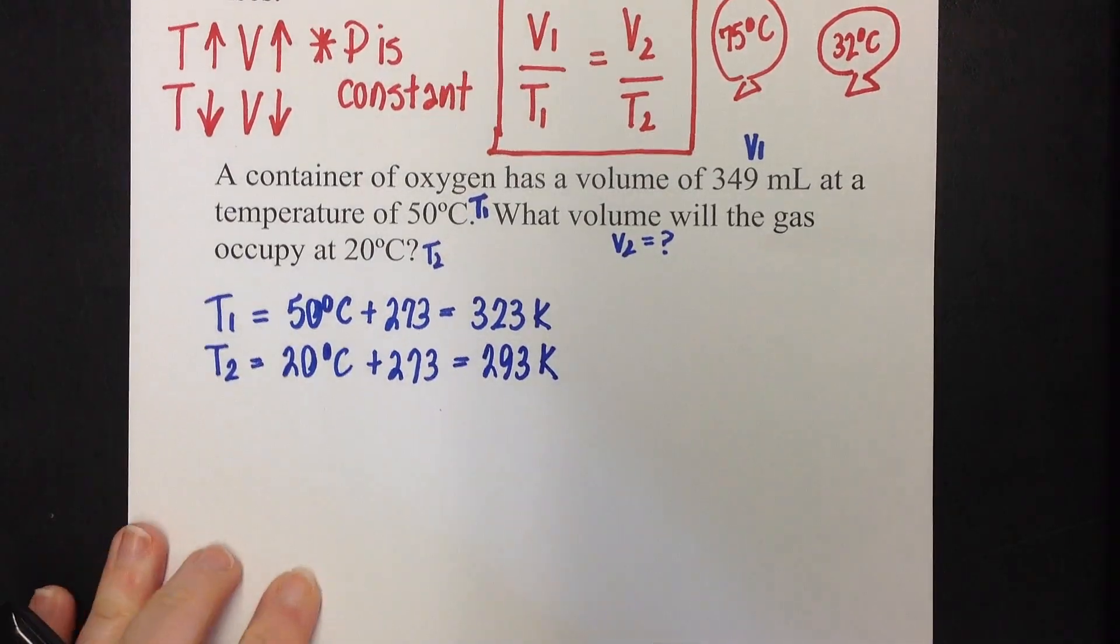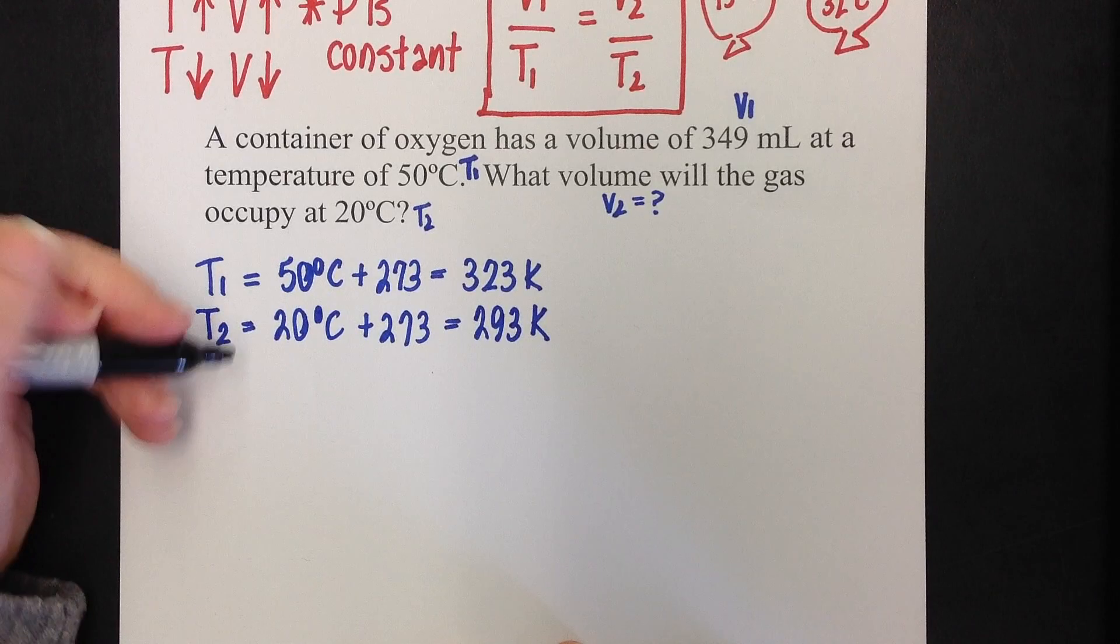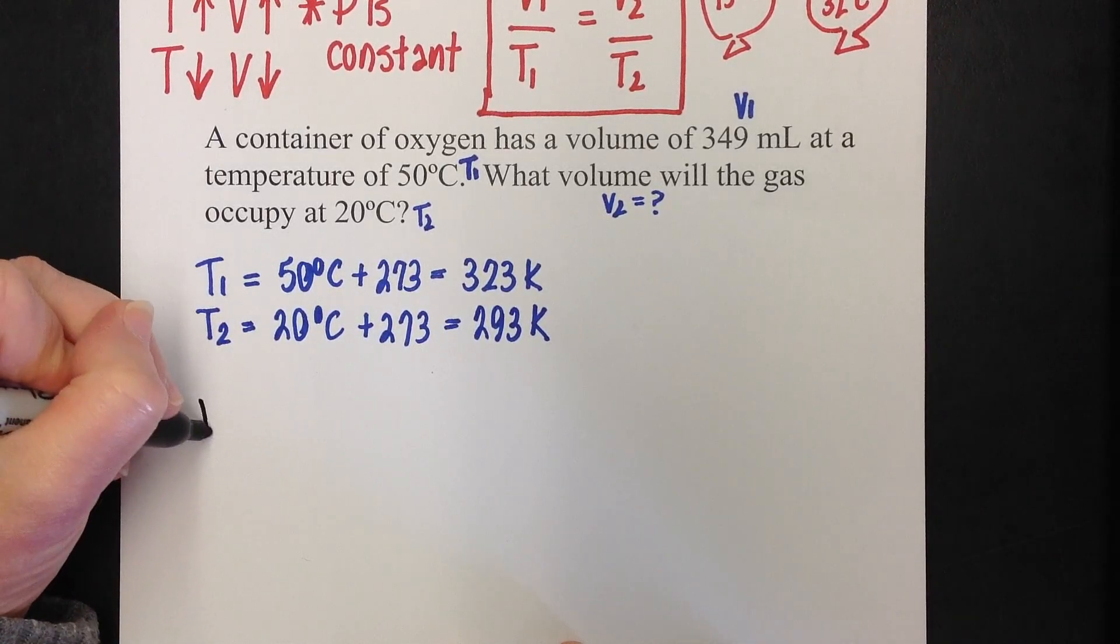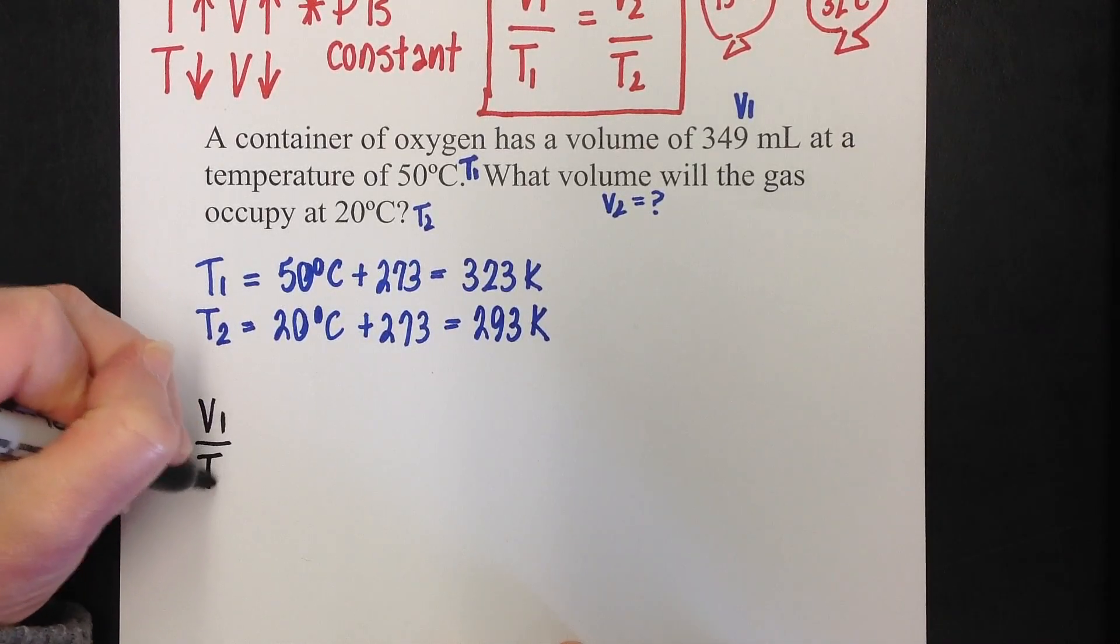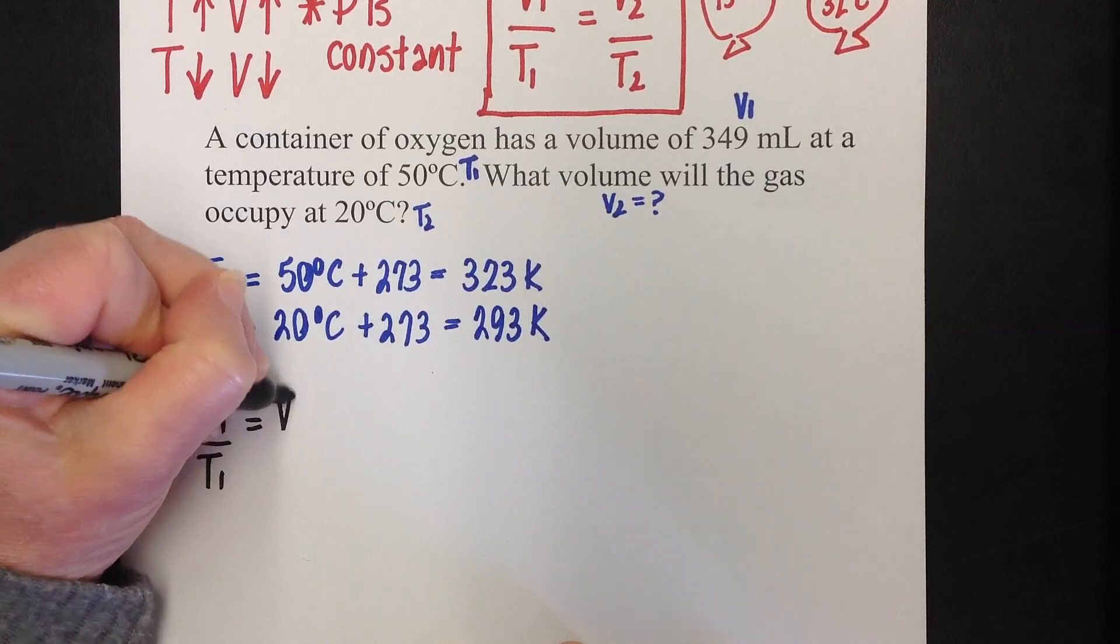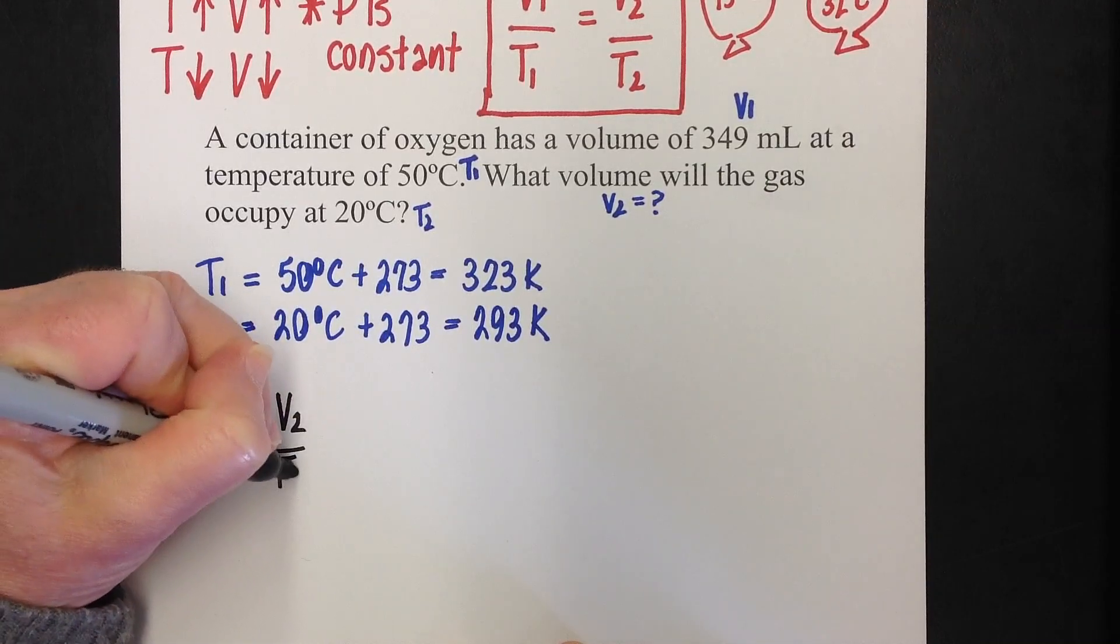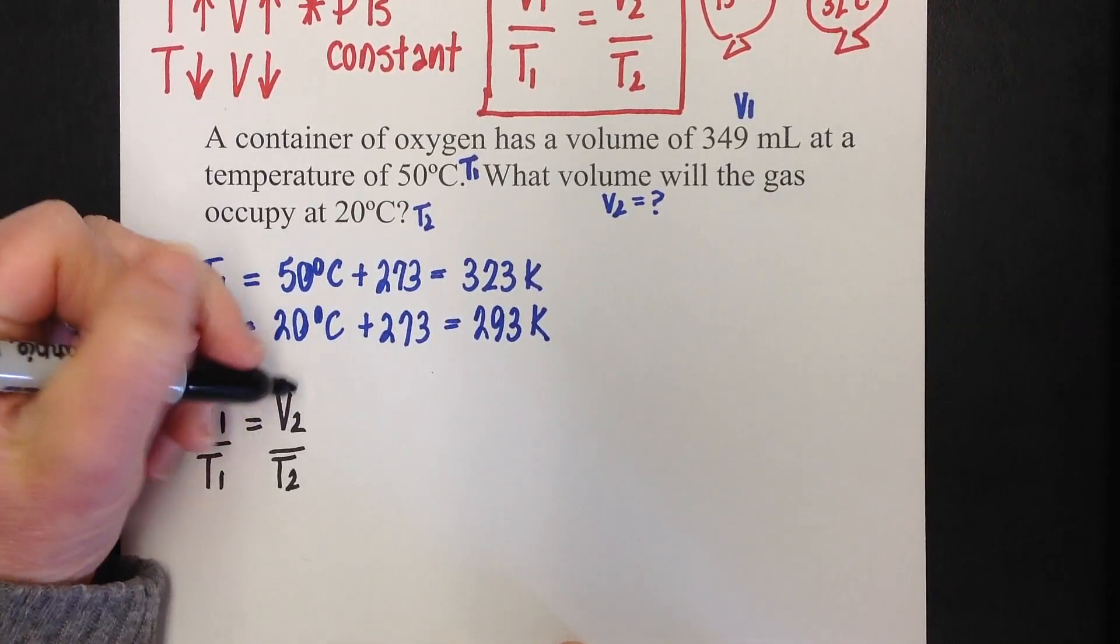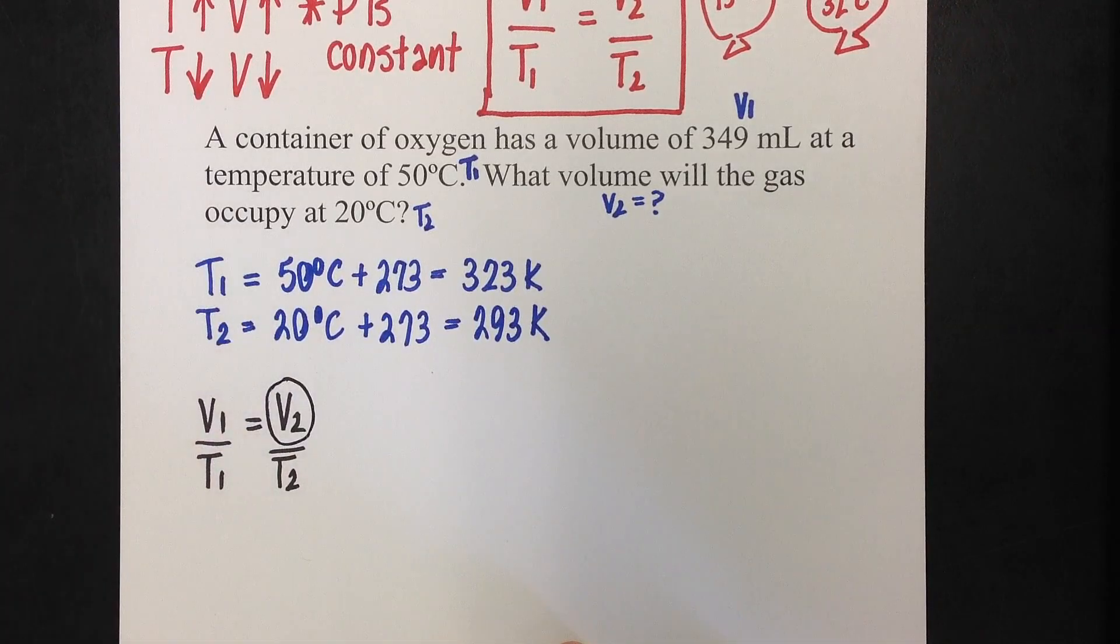So, I'm going to rearrange my formula. And my formula for Charles's Law is V1 over T1 equals V2 over T2. In this case, I am solving for V2.